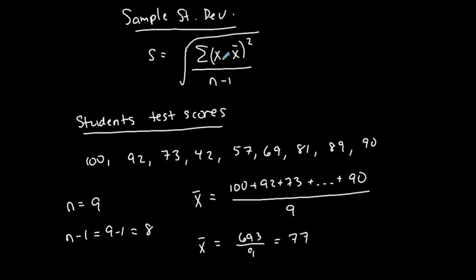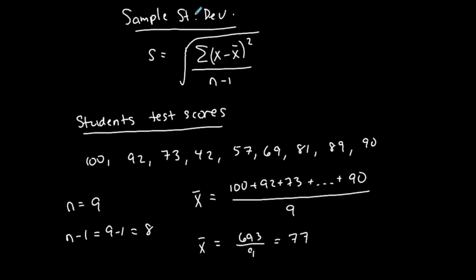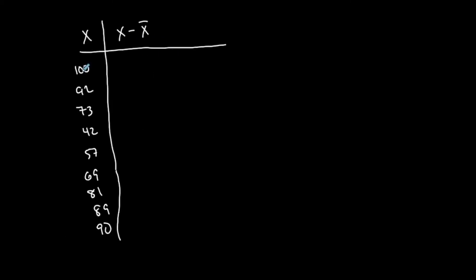Then remember I said we're going to do in the parentheses first. So each one of these data values minus the mean, minus the mean which is 77. So x minus x bar is going to be this column. So I'm going to extend this table step by step to represent this portion of my sample standard deviation formula.